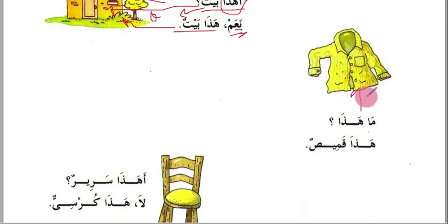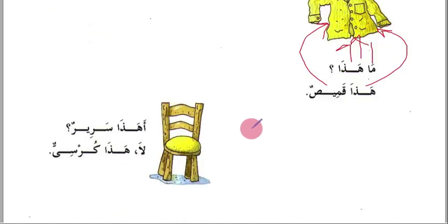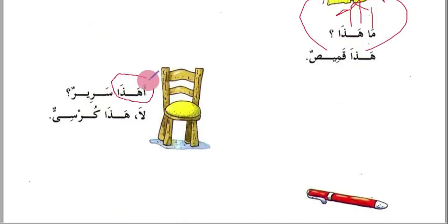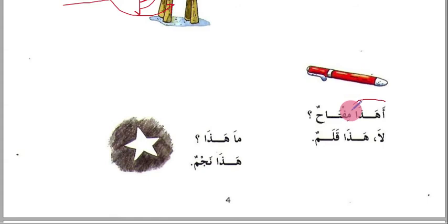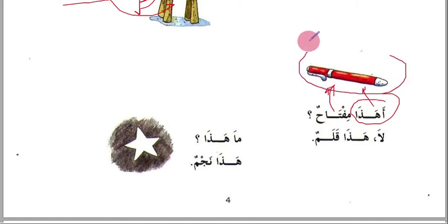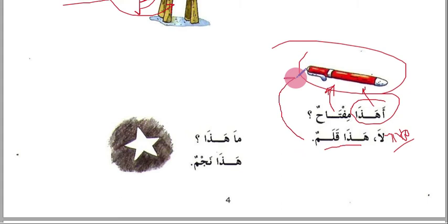'Ma hadha? Hadha qamisun' — what is this? This is a shirt. 'Ahadha sarirun?' — is this a bed? 'La' — no. 'La' means no. 'Hadha kursiyun' — this is a chair. 'Ahadha miftahun?' — is this a key? 'La' — no. 'Hadha qalamun' — this is a pen.